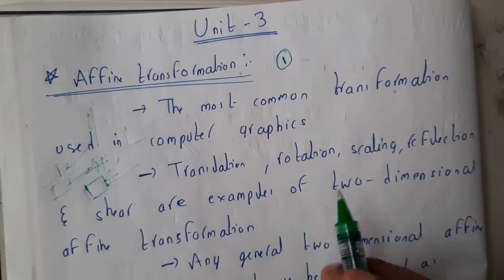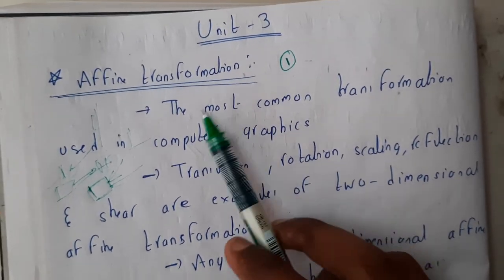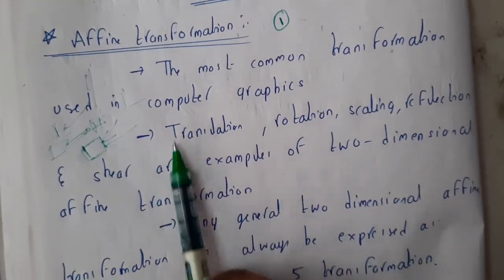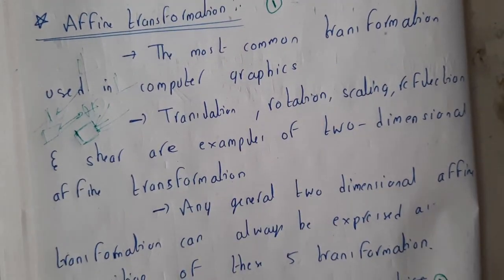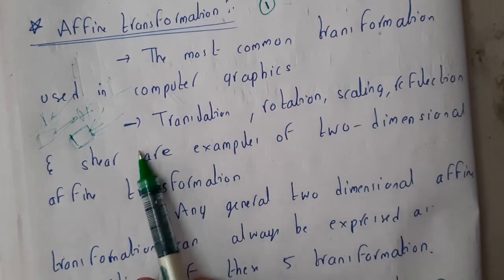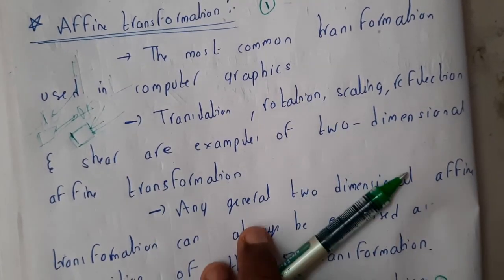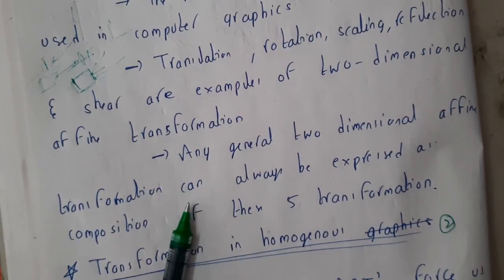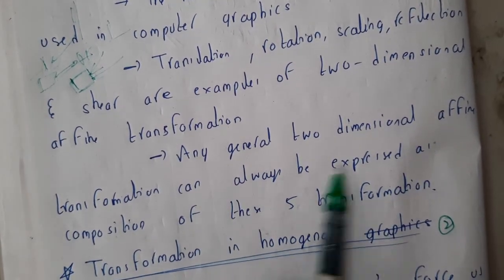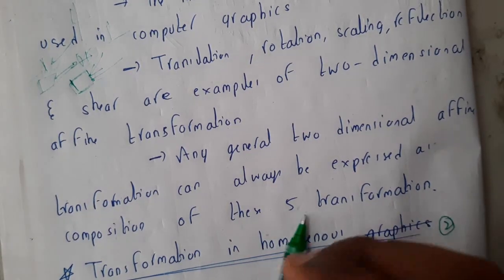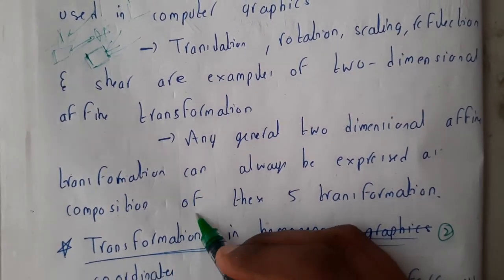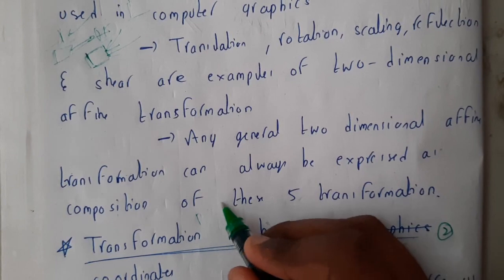The most common transformations used in computer graphics are nothing but affine transformations. Transformations such as translation, rotation, scaling, reflection, and shearing are some of the examples of 2D or 3D affine transformations. Any general two-dimensional affine transformation can also be expressed as a composition of two to three or five transformations — for example, one rotation, one translation, then another rotation, and so on.